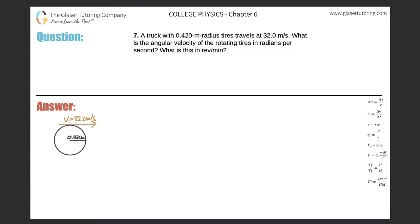Number seven: A truck with 0.42 meter radius tires travels at 32 meters per second. What is the angular velocity of the rotating tires in radians per second and then in revolutions per minute? Alright, so here's our tire.